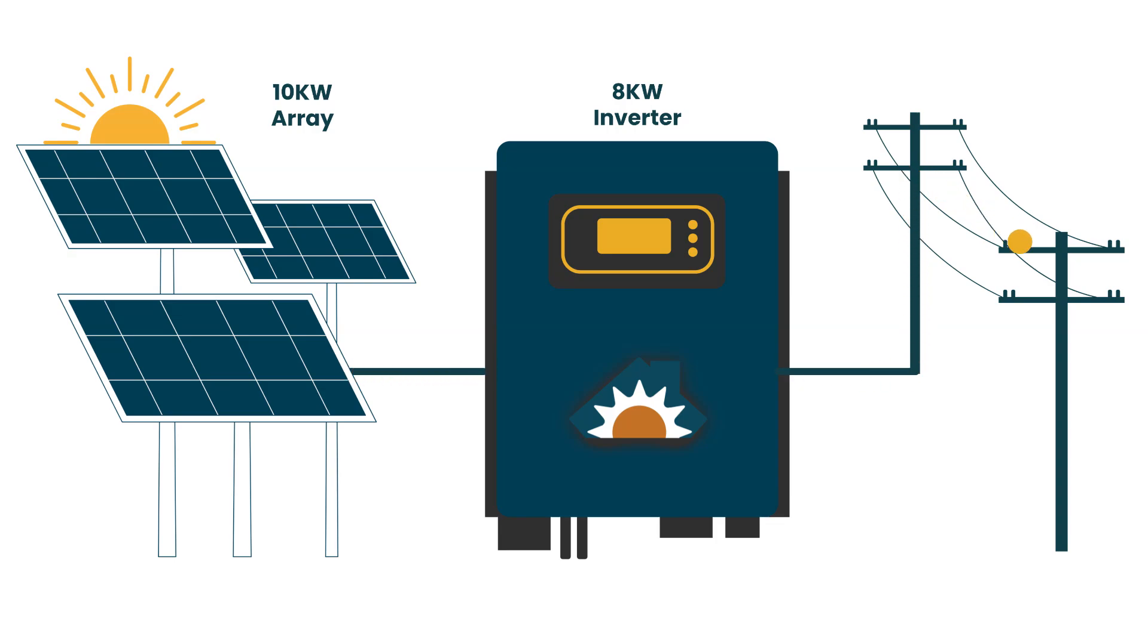How can you have a 10 kilowatt array on an 8 kilowatt inverter, or in other words, a DC to AC ratio of 1.25?